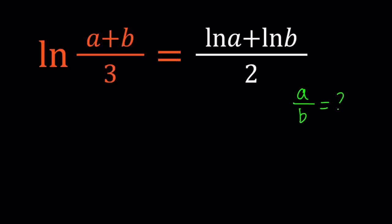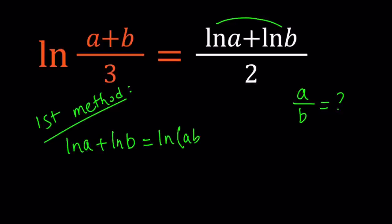Alright, I'll be presenting two methods. Let's start with the first one. For my first method, I'm going to use a property of logs, which is very helpful. If you have the sum of two logs, that can be written as the log of a product. So ln(a) + ln(b) can be written as ln(ab), and vice versa.